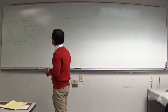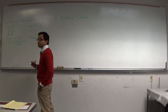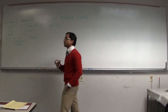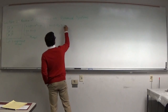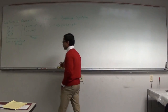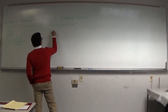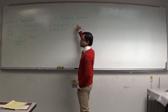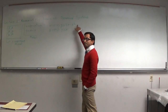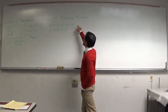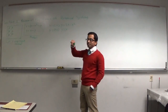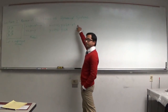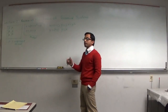Setting x-dot equals zero gives us the x-nullcline: y equals 2x minus x-squared. Setting y-dot equals zero gives us the y-nullcline: y equals x. These are our two nullclines. On the x-nullcline, x-dot equals zero so motion is only vertical. On the y-nullcline, y-dot equals zero so motion is only horizontal. This tells us something very important about what the phase plane is going to look like.